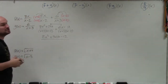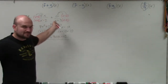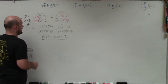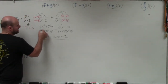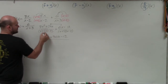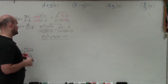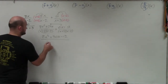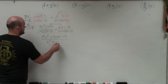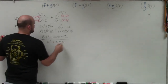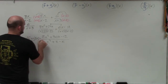Many books or tests may want you to multiply out the denominator, which is perfectly fine. Applying FOIL to x minus 2 times x plus 3 gives x squared plus 3x minus 2x minus 6, so that simplifies to x squared plus x minus 6. That is f plus g of x.